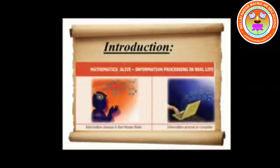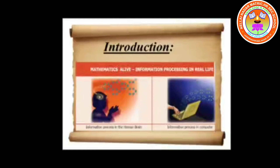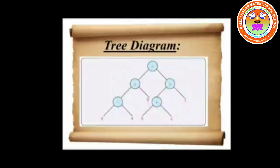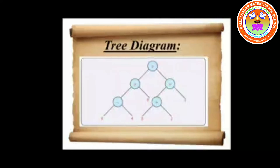Introduction: Mathematics alive — information processing in real life, information processing in the human brain, and information processing in computers. Computers use tree diagrams to perform billions of operations in a uniform way. We will learn about tree diagrams for both numeric and algebraic expressions. It is a picture which looks like an upside-down tree. Every node has 1 or 2 branches, and the leaves are numbers. The branching nodes have operations on them — this is called a tree diagram.